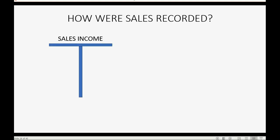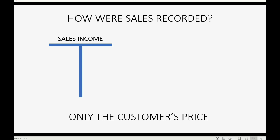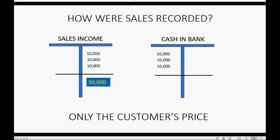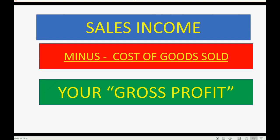Sales were recorded with a separate account in the chart of accounts just to record all money that came in from sales. Only the money amounts customers paid got recorded in the sales income account — recorded at the same time in the cash in bank account. Each individual sale was recorded on the credit side of the sales account and the debit side of the cash in bank account. At end of month we totaled the money that came in from sales as sales income.